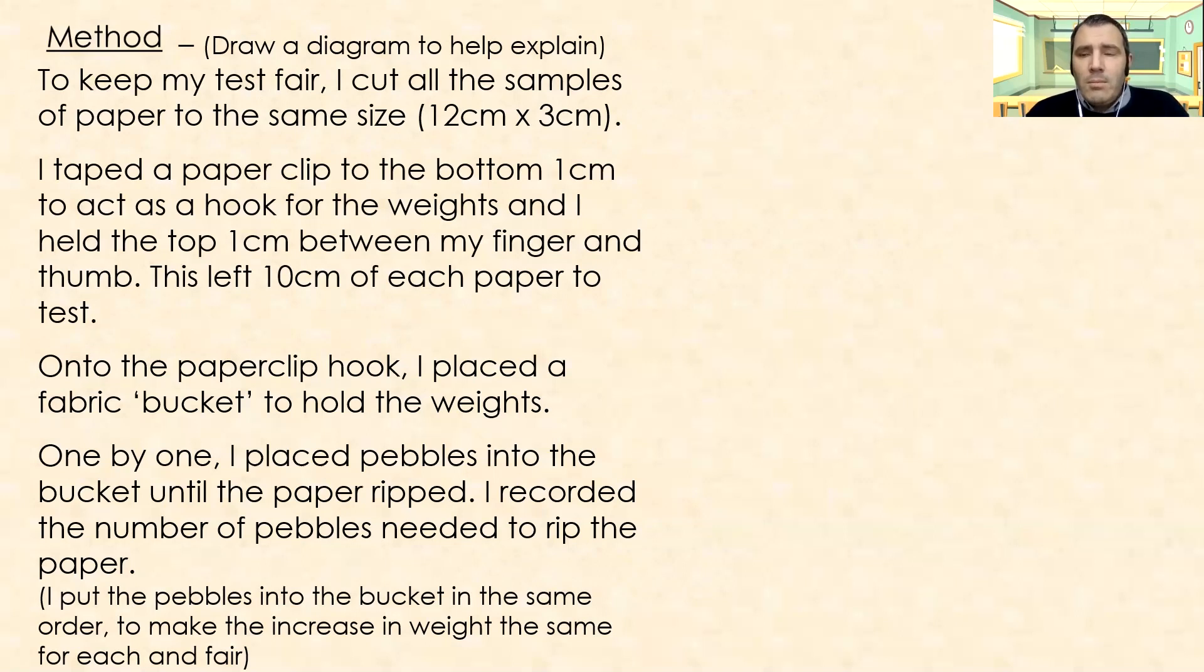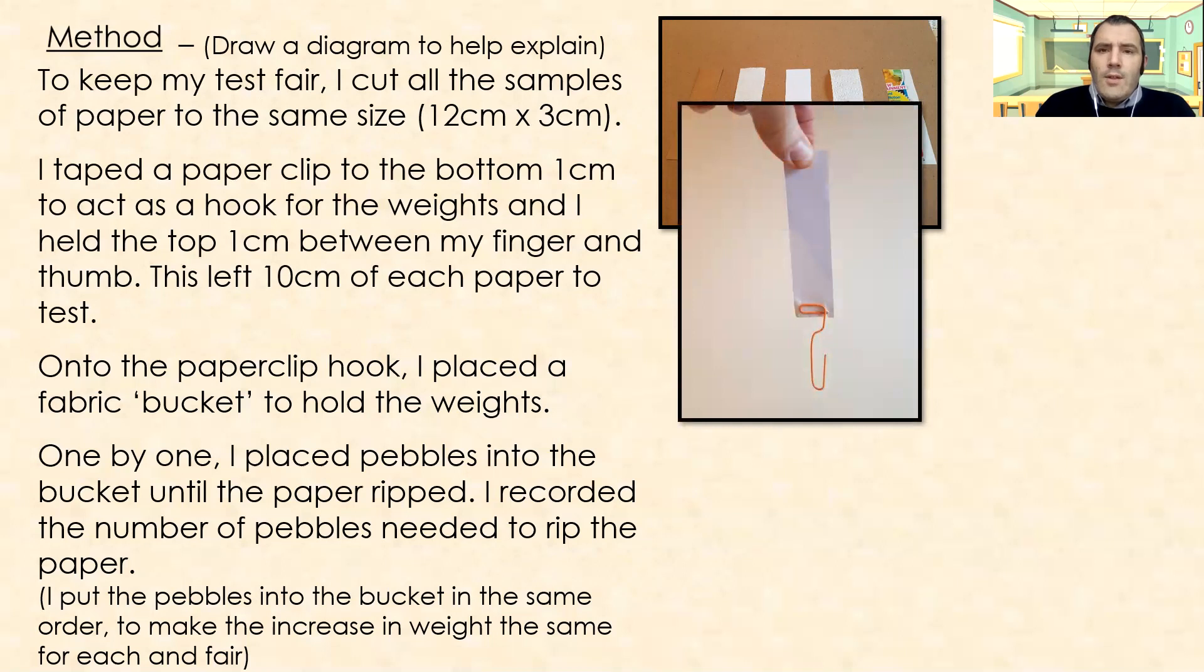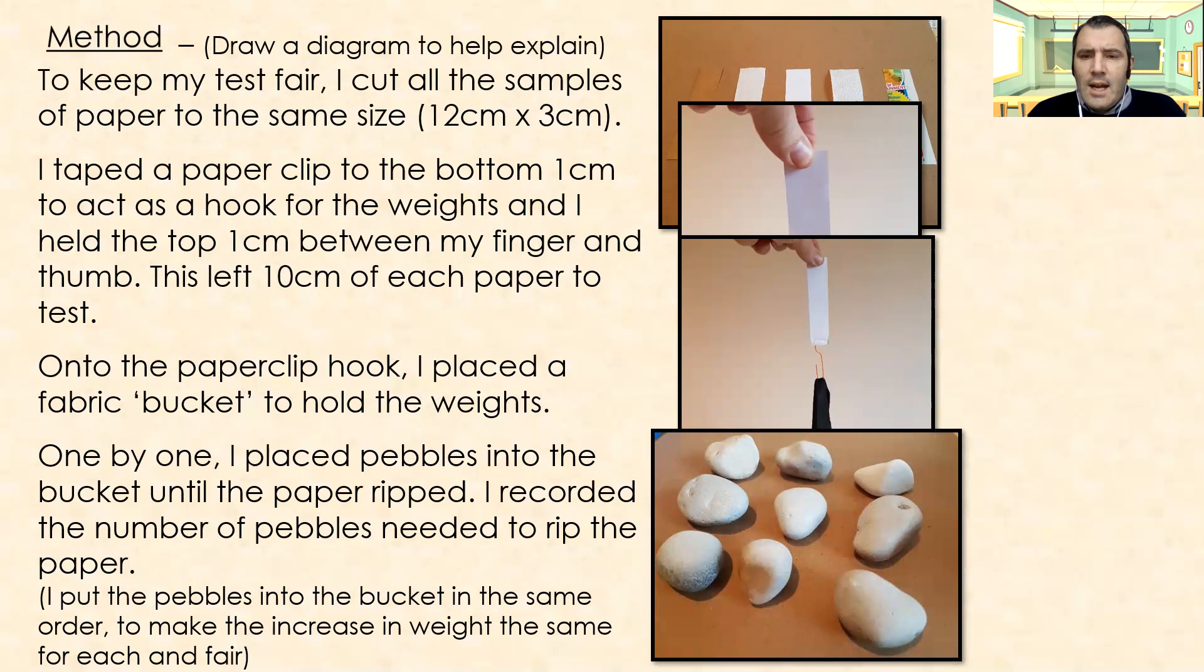What I could do, I could weigh each pebble on its own and record those weights so that when someone else comes to redo the test, they can put the exact same amount of weight in each time and check my results. So I could make it even fairer. So here we have my strips, all cut 12 centimetres by three centimetres. That's how I've taped my paper clip on. That's how I've held it. So these are your diagrams you could draw out. So if you wanted to show how you held your paper, you can show that in your diagram. I then hooked my bucket on. So there's my bucket ready for my pebbles. And there are my pebbles laid out in order, ready to put them on. Thinking back, maybe I should have put numbers on them so I made completely certain I was putting them all on in the same order. But that's something you can think about with your method.